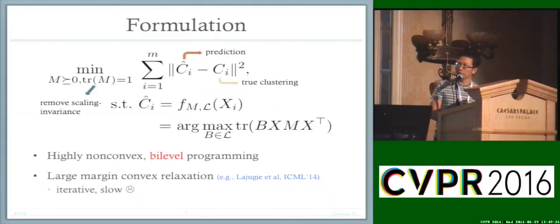Once we fix the prediction function, the overall formulation is straightforward. We try to find a distance metric M such that our prediction c_i_hat is close to the true clustering c_i, at least over the training set. By minimizing these differences, we hope the algorithm will generalize well to the test set.